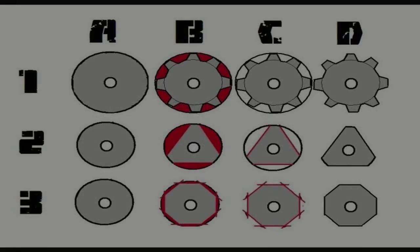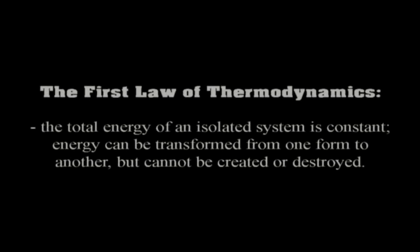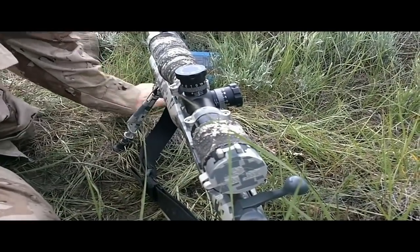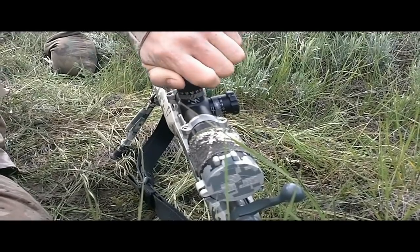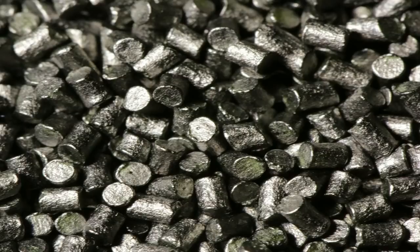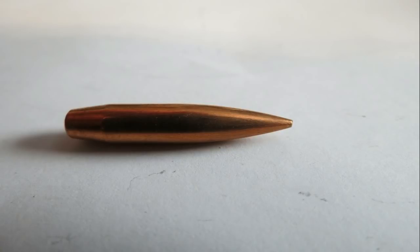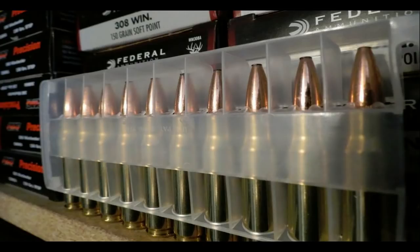One of the principles of thermodynamics you want to be familiar with is the first law of thermodynamics. In a nutshell — as you may have heard in high school — energy cannot be created or destroyed. The total energy of an isolated system is constant; energy can be transformed from one form to another, but it can't be created or destroyed. In the context of a rifle barrel getting heated up, the energy exists in the chemical bonds of the propellants — the gunpowder sitting in your cartridge. That energy is converted from potential chemical energy into heat and kinetic energy of the bullet flying down the bore, among other steps.